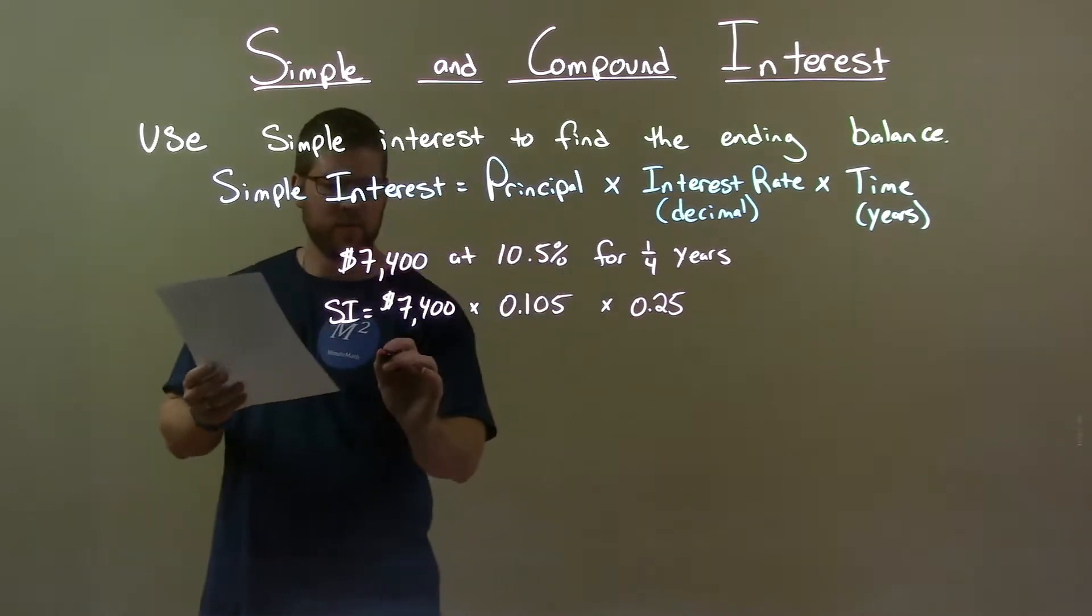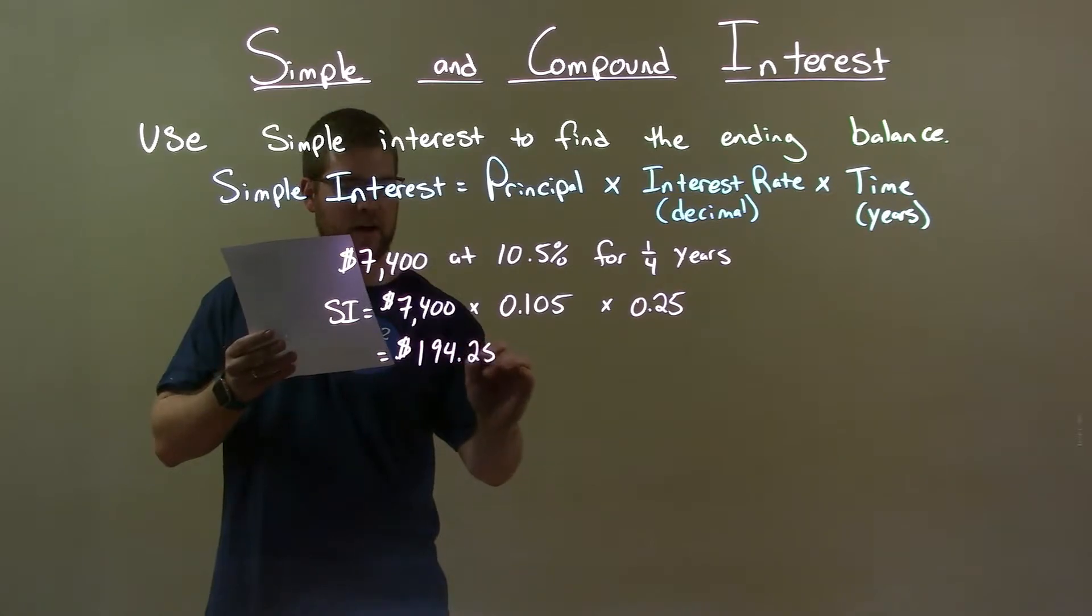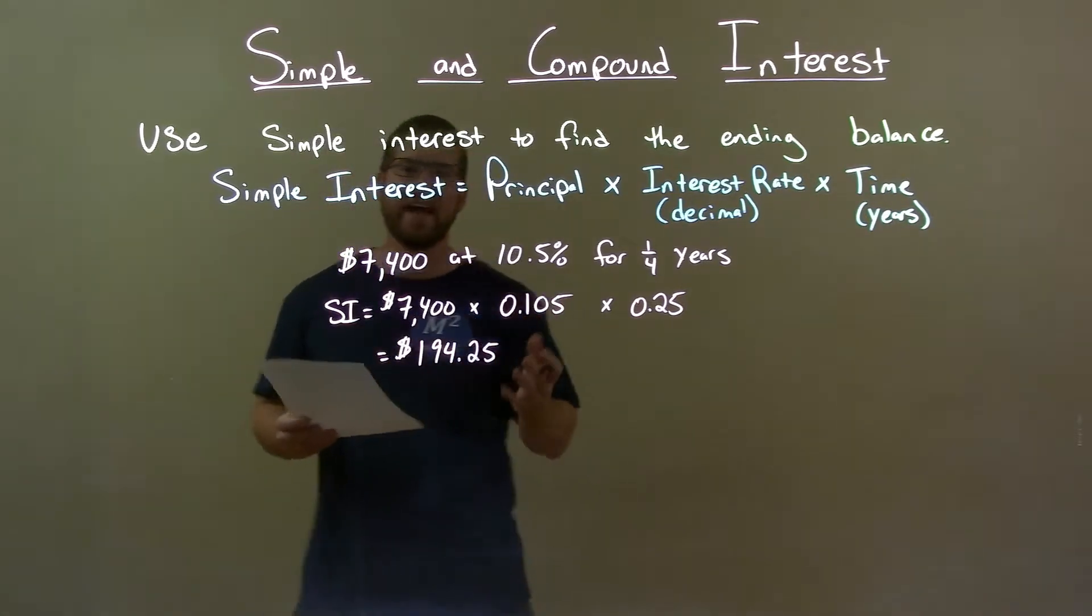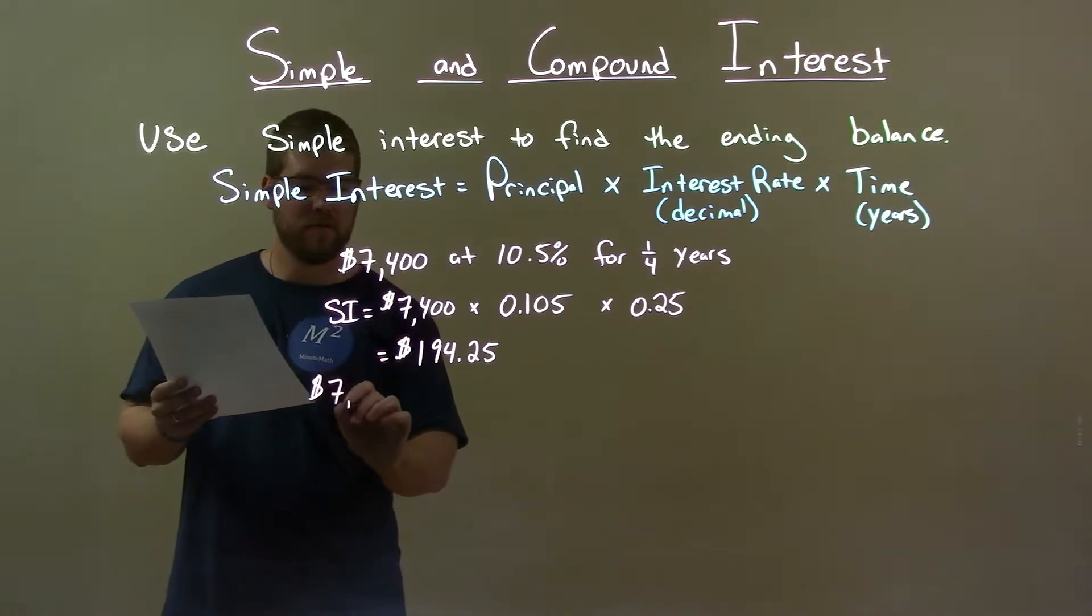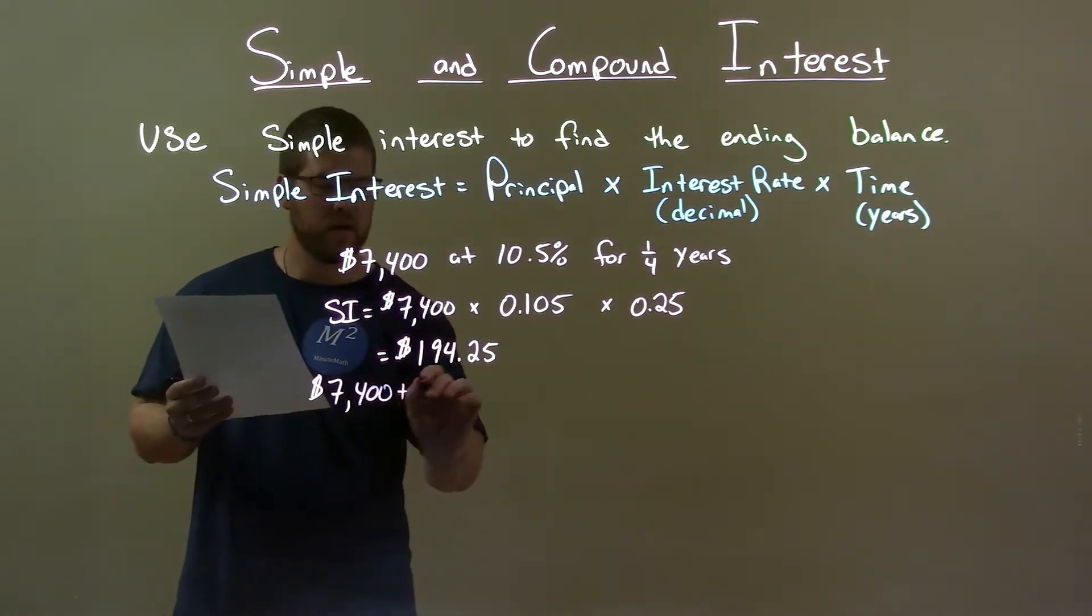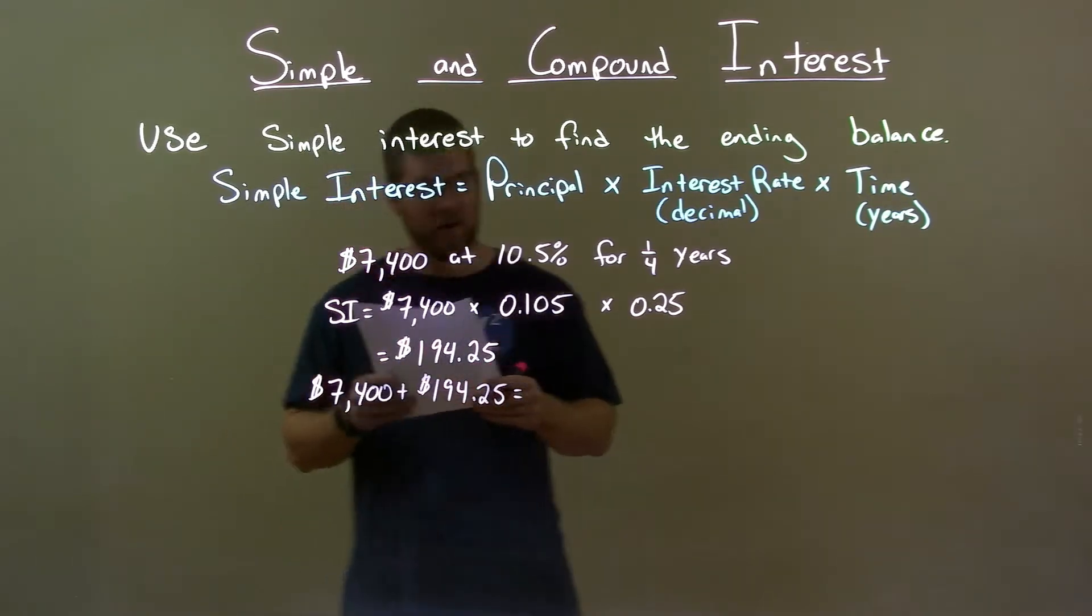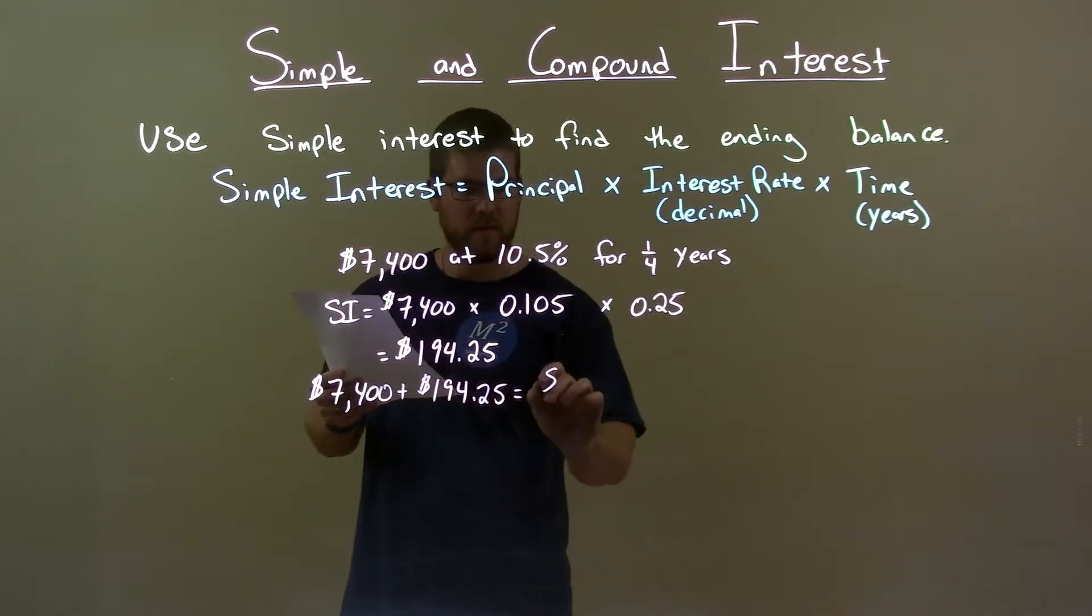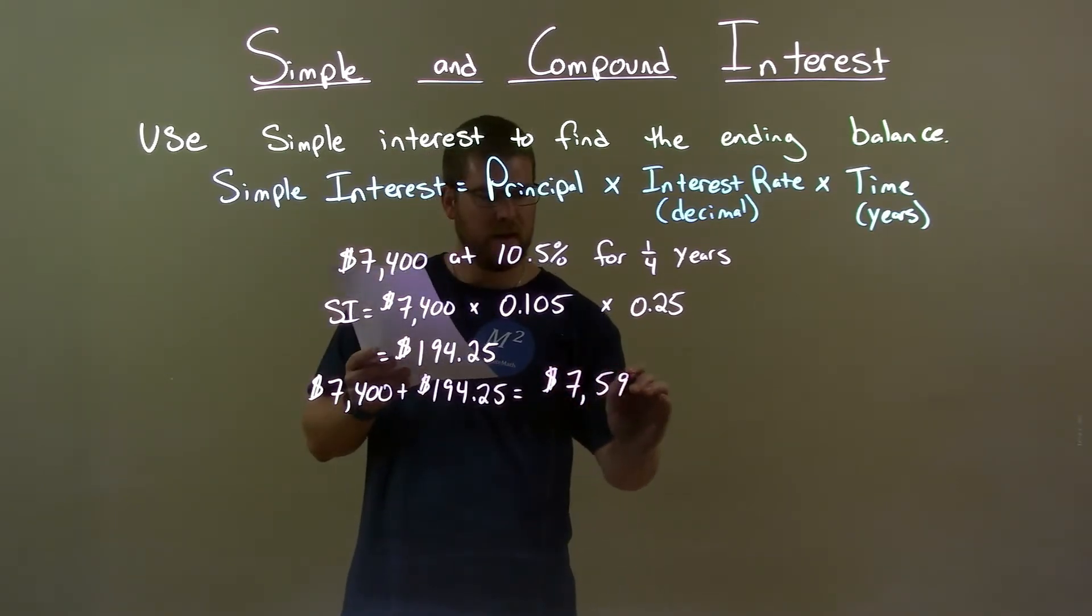This gives me a simple interest value of $194.25. We then have to add that back to our principal to get the ending balance. $7,400 plus $194.25 gives us our ending balance of $7,594.25.